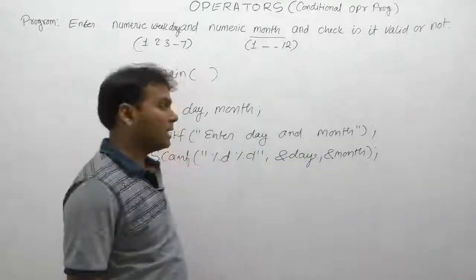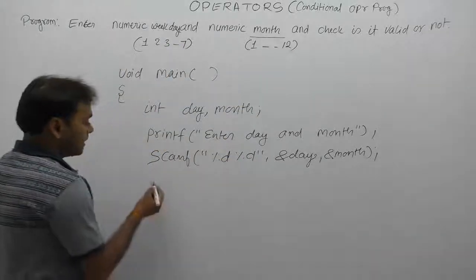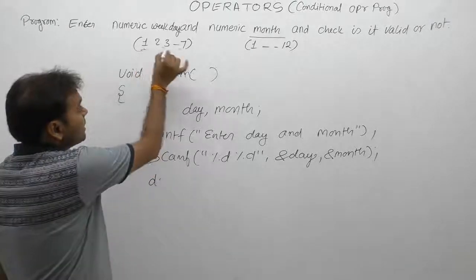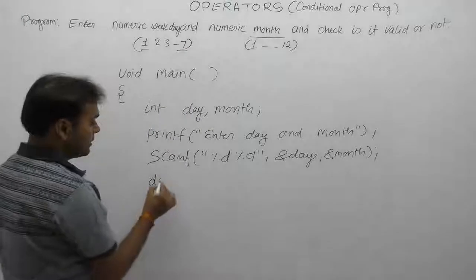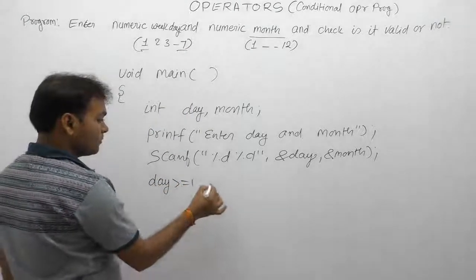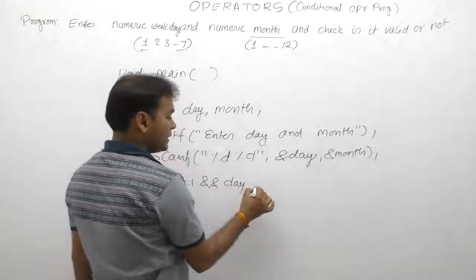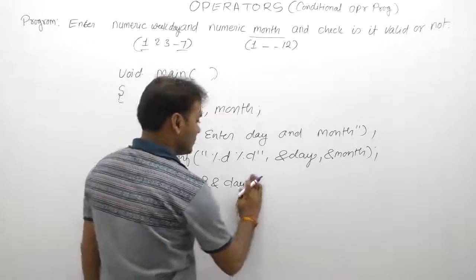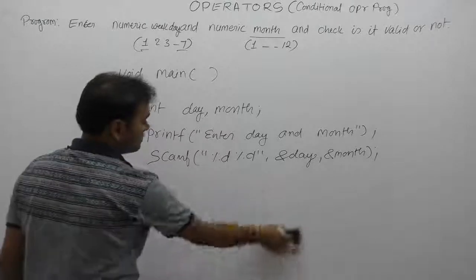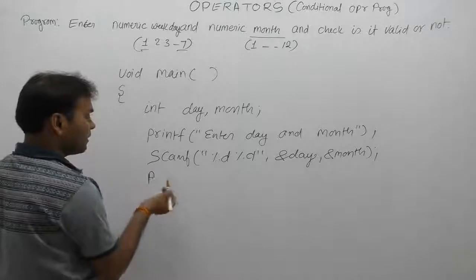The maximum range is one to seven. If day is greater than or equal to one and day is less than or equal to seven - the expression is directly passed in the form of printf. The result output displays either yes or no, or valid or invalid, or true or false using %s.